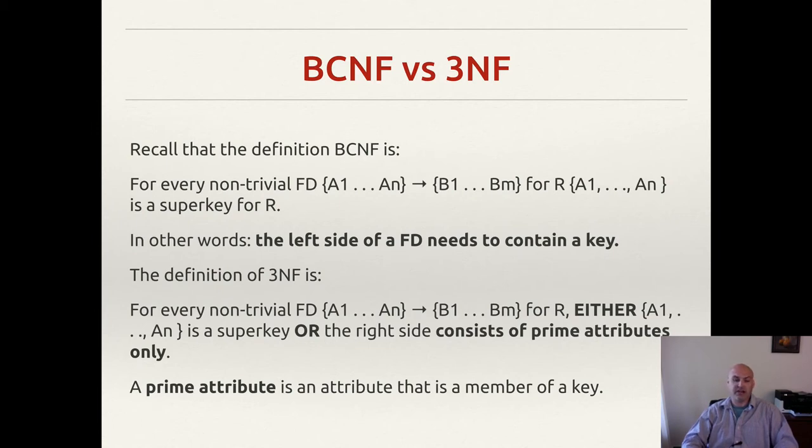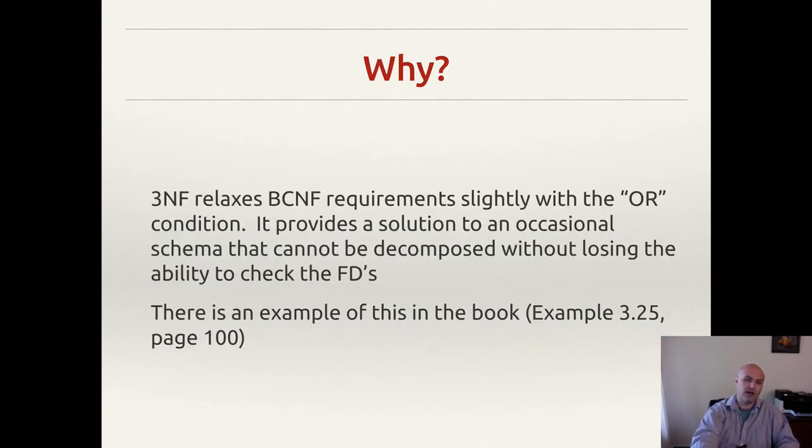So a prime attribute is an attribute that's a member of a key. Simply stated, if the attribute has nothing to do with the key itself, it's not prime. And what we're saying here is that you can use the functional dependency, and you can say that the attributes are part of the relation, not just if they are on the left side of the key, you can also say OR if the right side contains only prime attributes, then it's okay, that functional dependency can be part of the original relation. So it does change a little bit how and when you break out relations.